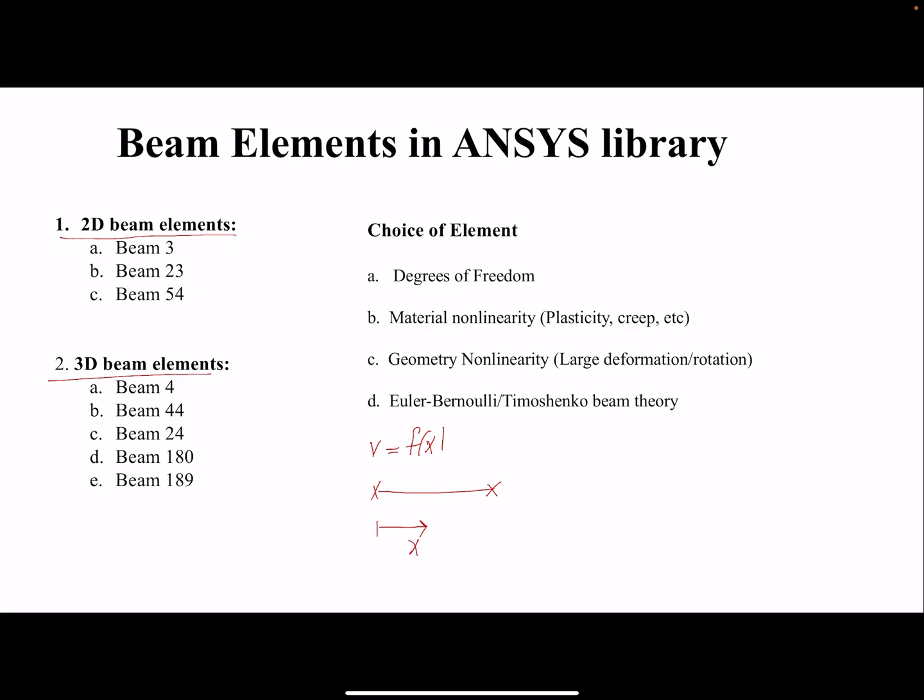So when we are referring to 2D beam or 3D beam elements, we are referring to the degrees of freedom that each node can have. So a 2D beam element, each node can have degrees of freedom of u, ν, and θ.